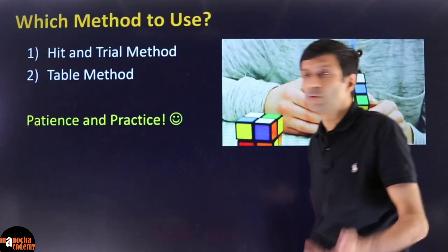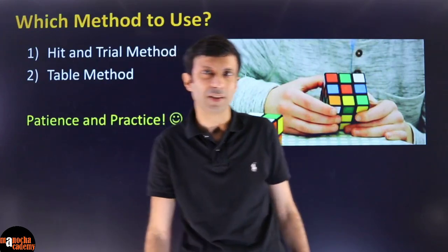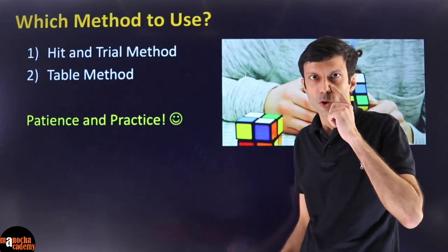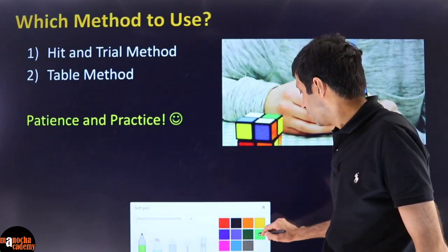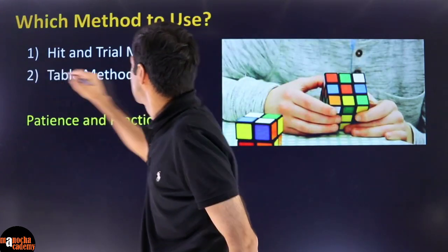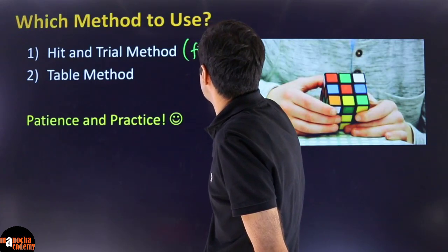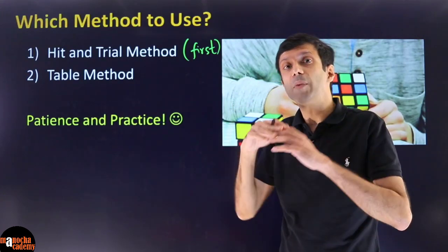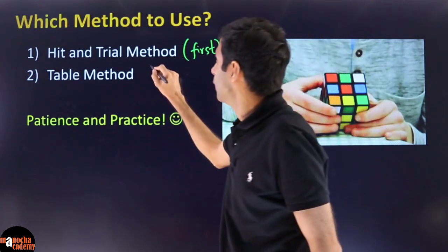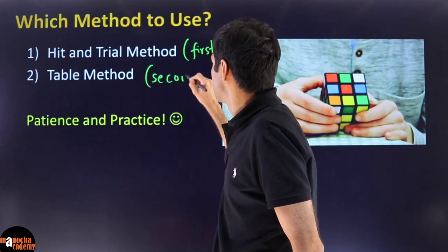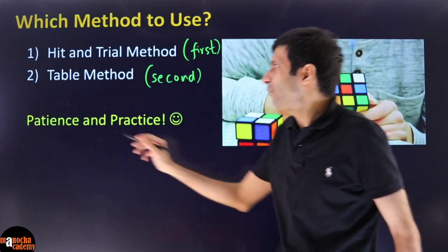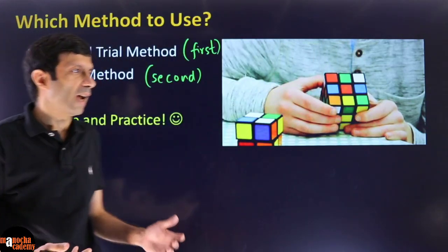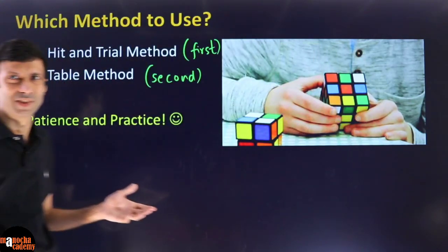Which method should you use? My recommendation: always try hit-and-trial first because it is very fast and you don't have to make a table. But for difficult equations that get confusing, use the systematic table method as the second option. With patience and practice you will be able to easily balance chemical equations.